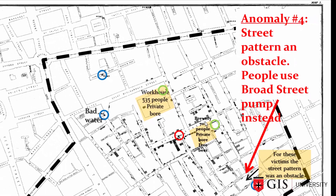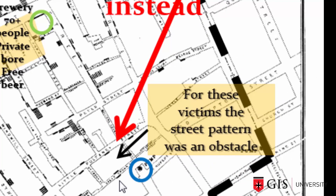Anomaly 4: there were deaths near a well that appeared to be close to victims on the map, but it turns out the street pattern meant that area was actually quite distant. That well is at a dead end, and people needed to walk a fair distance to reach it. So people were again traveling to the Broad Street well to get their water, rather than a well that looks close on the map but isn't.